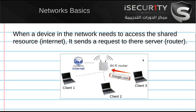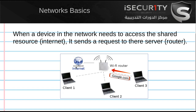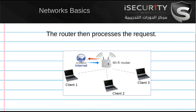So whenever client 3, for example, wants to open google.com, it's going to send a request to the router asking it for google.com. The router is going to go to the internet, grab google.com, and then forward it back to client 3. Client 3 does not have direct access to the internet — it has to go through the router, and the router brings the request and sends the response back to client 3.